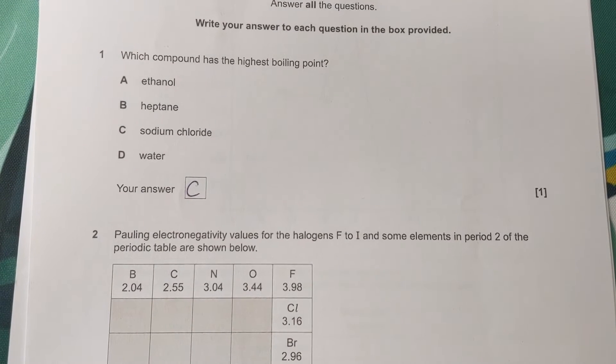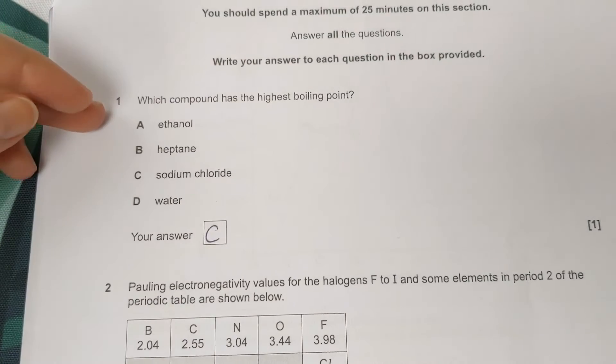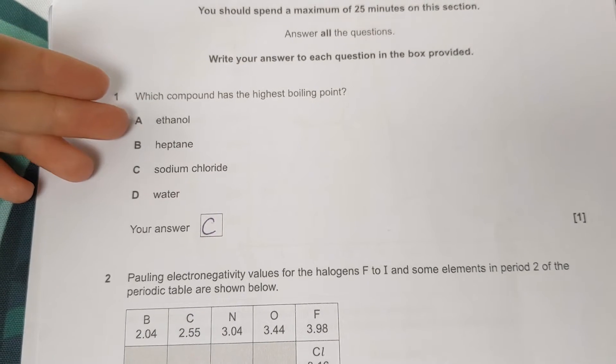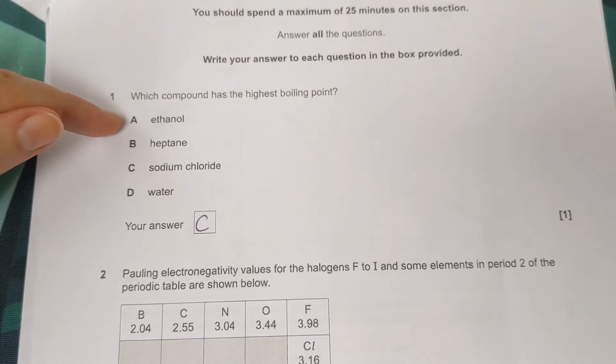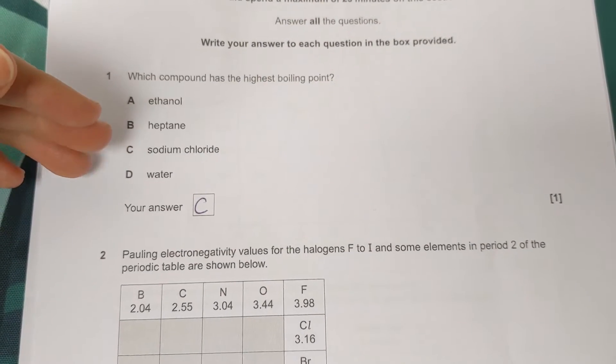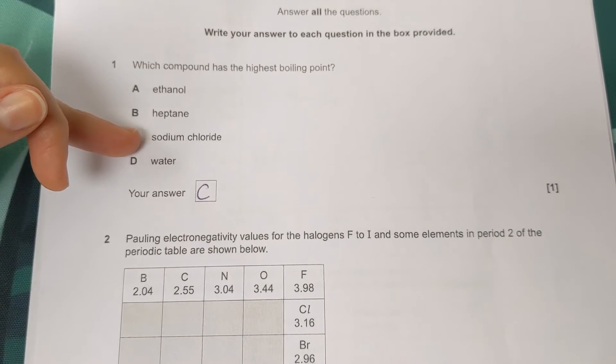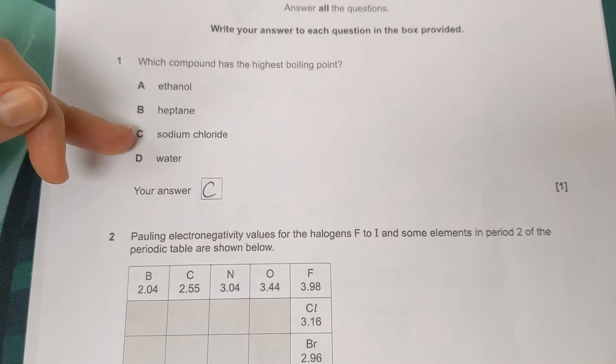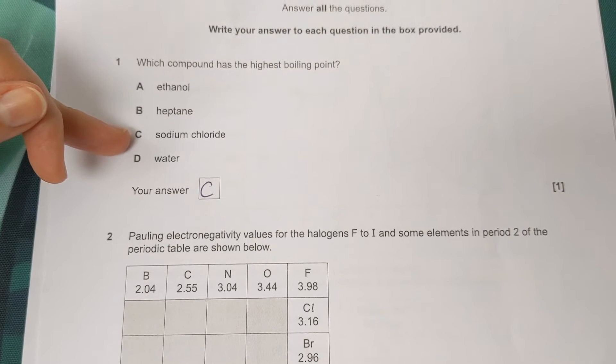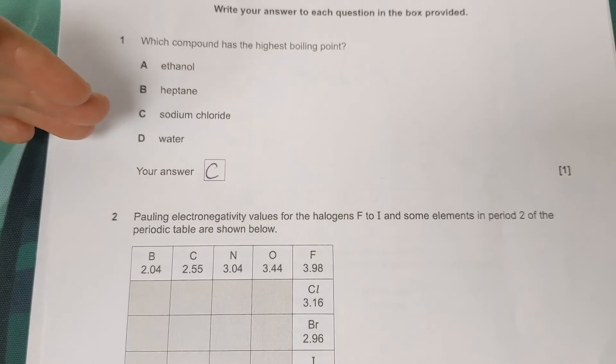We've got some more multiple choice. Which compound has the highest boiling point? So we've got ethanol, which has hydrogen bonding intermolecular forces, which are the strongest type of force. We've got heptane, so seven carbon chain, sodium chloride. Now that's a giant ionic lattice structure. So this one is the one with the highest boiling point because it's got a lot of strong ionic bonds that need to be broken in order to boil the substance.